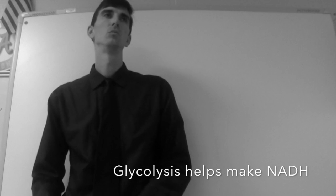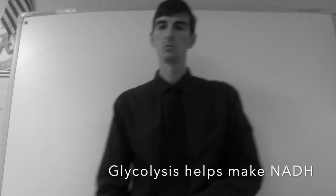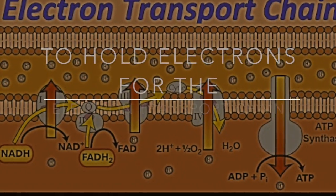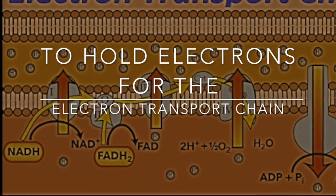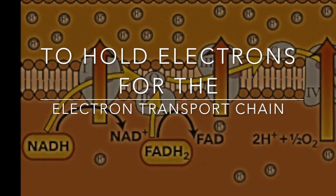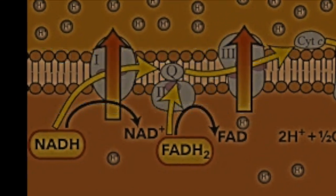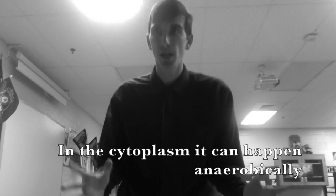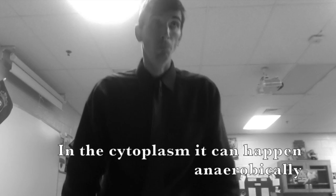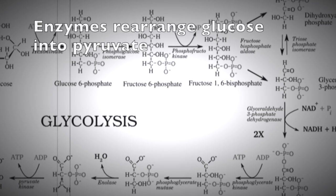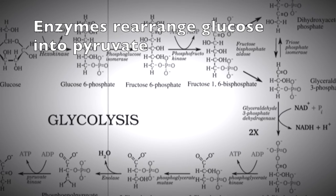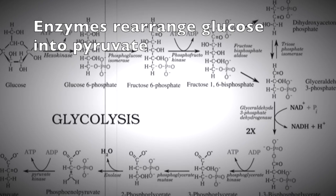Glycolysis helps make NADH to hold electrons for the electron transport chain. In the cytoplasm, it can happen anaerobically. Enzymes rearrange glucose into pyruvate.